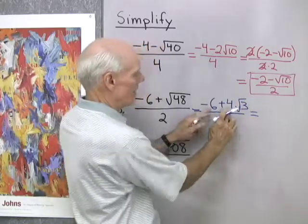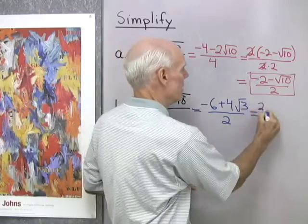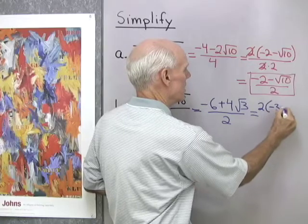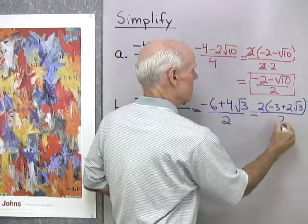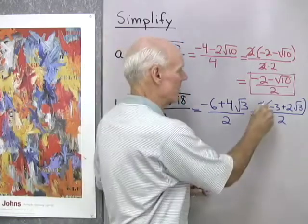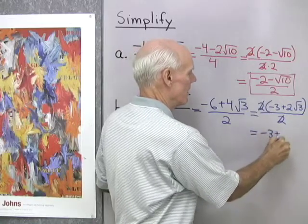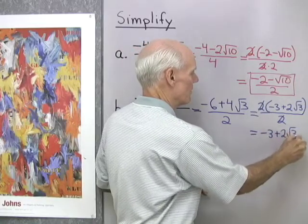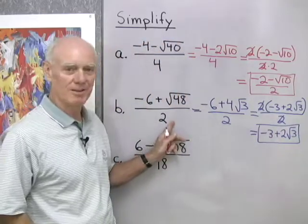I see I have a common factor of 2 in the numerator, I'll factor that out, 2 times negative 3 plus 2 square root 3, all divided by 2, and so now I have a factor common to the numerator and denominator, that 2, which I'll divide out. What's left is negative 3 plus 2 square root 3. So there's simplified form for that expression right there.